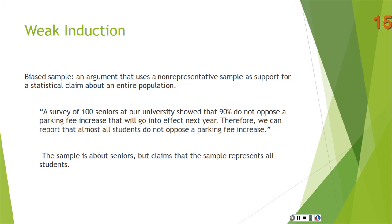You need a representative sample in order to draw a conclusion about the entire population. Here, the sample is not representative, so we aren't rational in drawing that conclusion — unless, of course, this were a tiny university. Suppose there are 20,000 students.